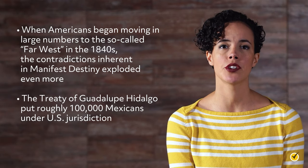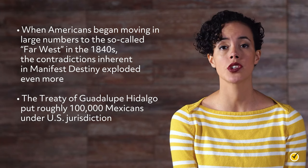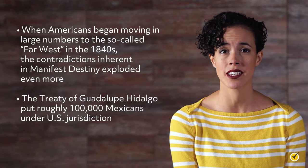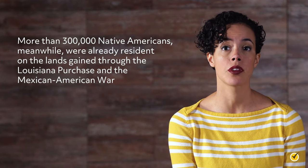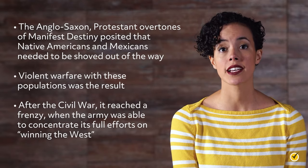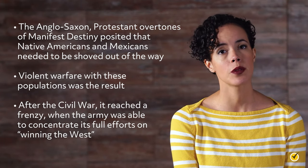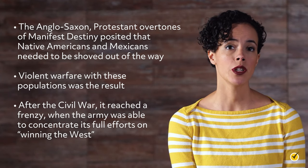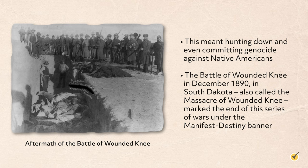When Americans began moving in large numbers to the so-called Far West in the 1840s, the contradictions inherent in Manifest Destiny exploded even more. The Treaty of Guadalupe Hidalgo put roughly 100,000 Mexicans under U.S. jurisdiction, while more than 300,000 Native Americans were already resident on the lands gained through the Louisiana Purchase and the Mexican-American War. The Anglo-Saxon Protestant overtones of Manifest Destiny posited that Native Americans and Mexicans needed to be shoved out of the way, and violent warfare was the result. After the Civil War, it reached a frenzy when the army concentrated its full efforts on winning the West — in reality, hunting down and even committing genocide against Native Americans. The Battle of Wounded Knee in December 1890 in South Dakota marked the end of this series of wars.